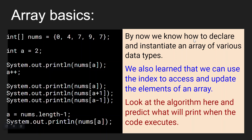We're going to review some array basics here. By now, you know how to declare and instantiate an array of various data types. For instance, we have an array of integers called nums, and we're using an initializer list to instantiate it with these values. We also learned that we can use the index to access and update elements of an array. So here we've got an integer variable called A set to 2, and we're doing some print statements using A to access the index. Go ahead and look at this algorithm and predict what will print when the code executes — grab a sheet of paper, write down your prediction, and then move forward in the video when you're ready.